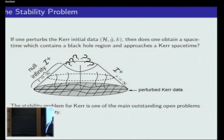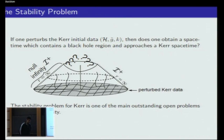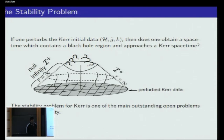To describe the stability problem: you consider your spacetime, you take the initial data described earlier, and you perturb it — perturbing a little bit the metric and the second fundamental form. Then for the perturbed data you try to solve the system and see if the spacetime you obtain is close to the spacetime you had earlier. One part of the problem is whether you will still have a black hole. The other part is to understand what happens inside the black hole — whether perturbing data will lead to a singularity.